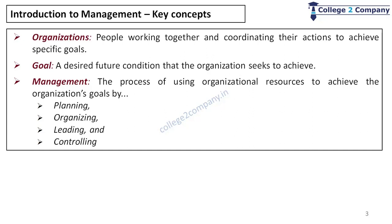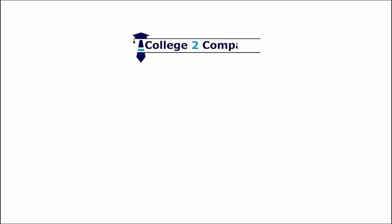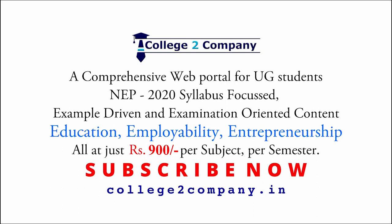Management is the process of using organizational resources such as men, machine, materials and money to achieve the organization's goals by planning, organizing, leading and controlling. Planning is deciding in advance what needs to be done in the future. Organizing is mobilizing the resources including people, while leading is motivating the employees to do the work, and finally, controlling is monitoring the work and reducing deviations or mistakes.